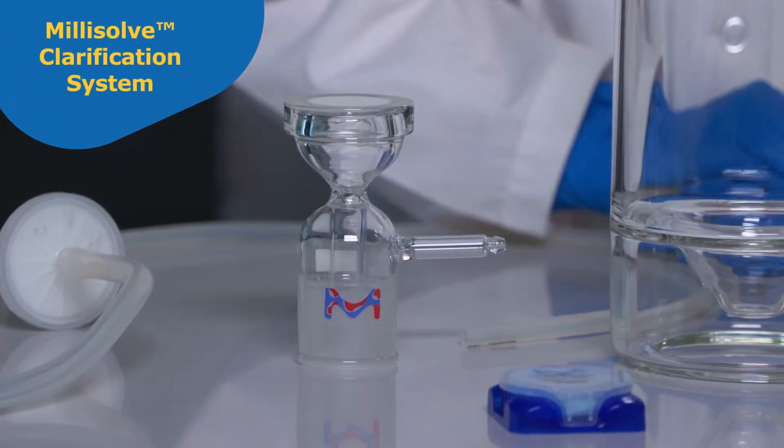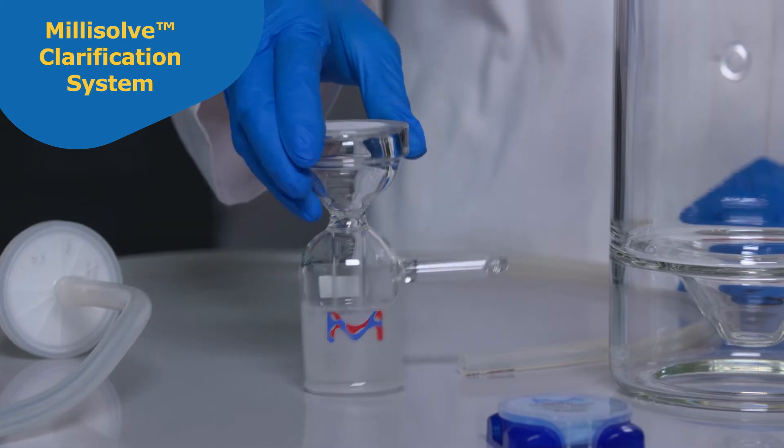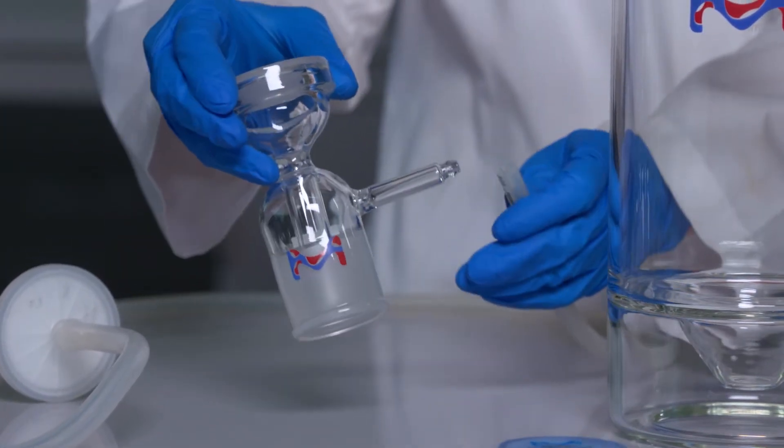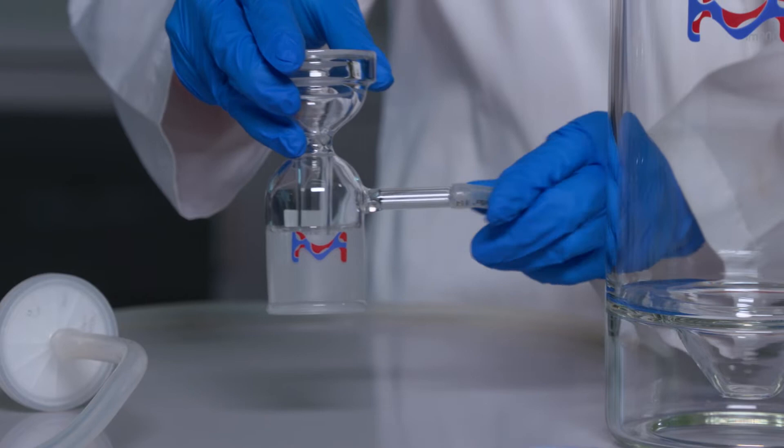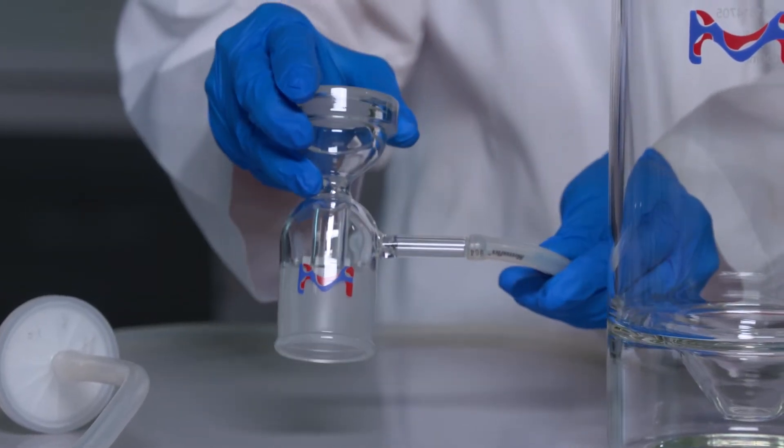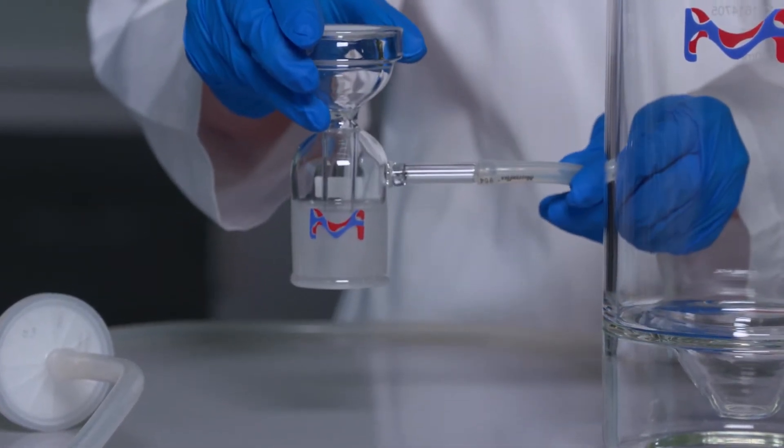To use the Millisolve Clarification System, connect one end of the vacuum tubing to the sidearm or outlet of the vacuum base. Push gently to secure the tubing, wetting the sidearm with water if necessary.